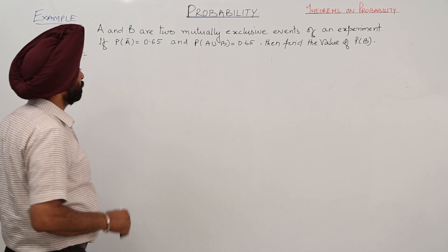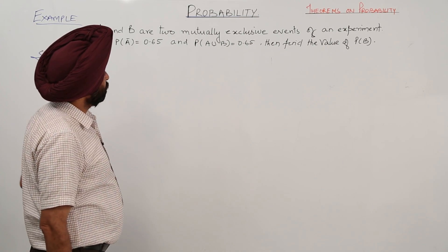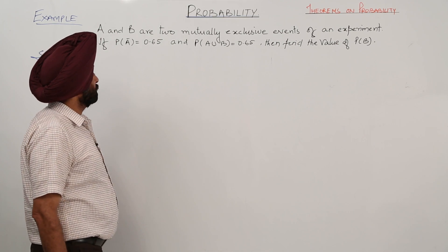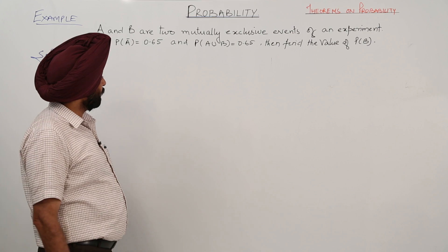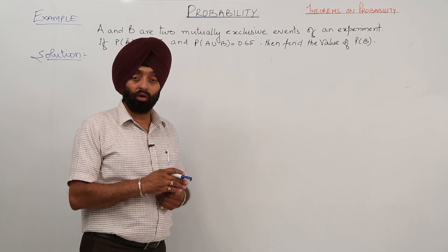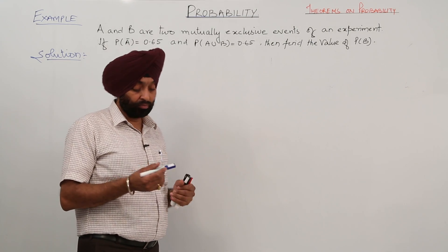Example based on theorems on probability. A and B are two mutually exclusive events of an experiment. If P(A') is 0.65 and P(A or B) is 0.65, then find the value of probability for B.